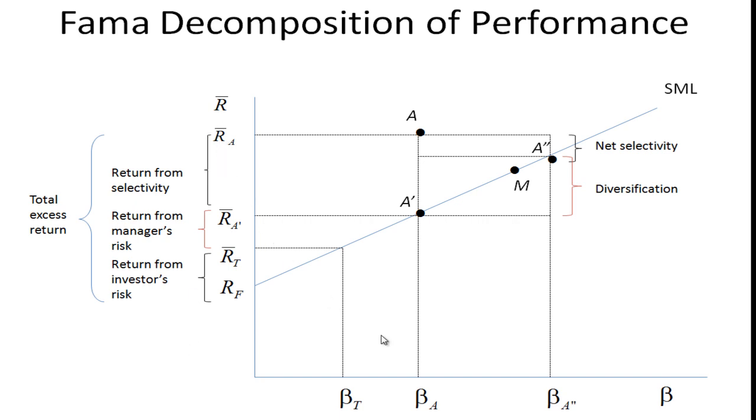What we have here is a portfolio that has systematic risk of beta A and expected return of R bar A. You'll notice it plots above the security market line, so you've beaten the expected return. You've beaten what you should have gotten for that level of risk.